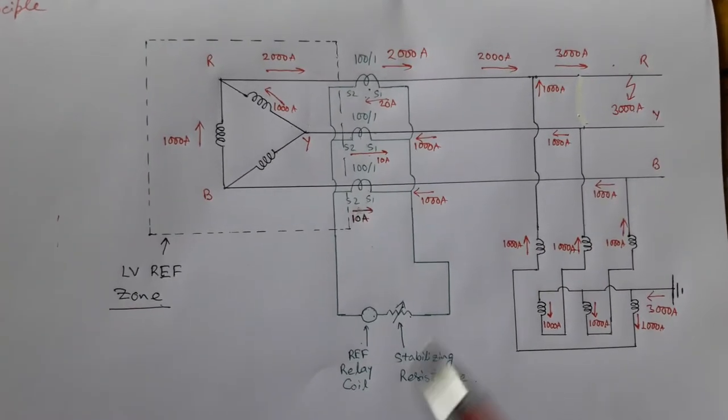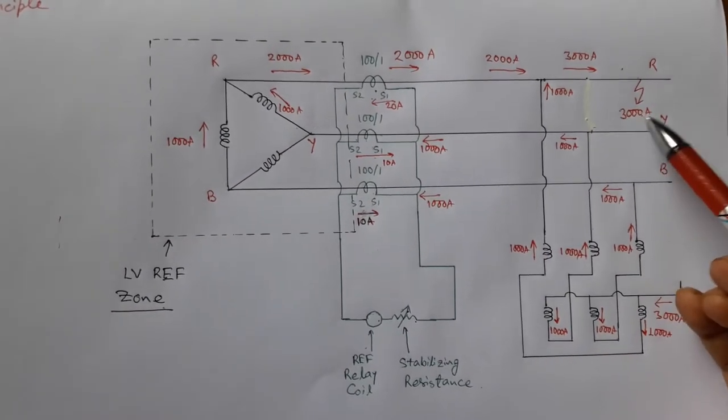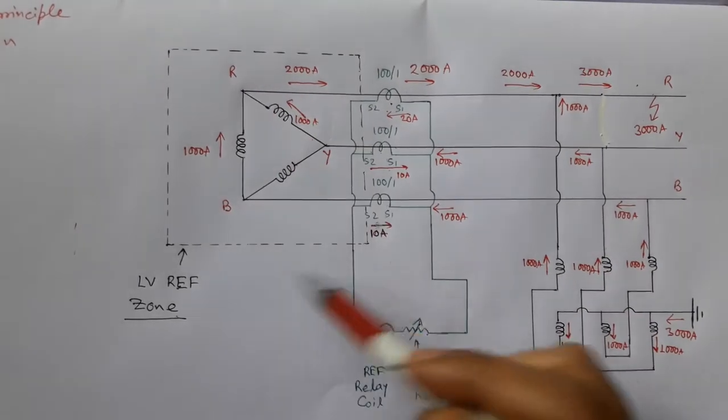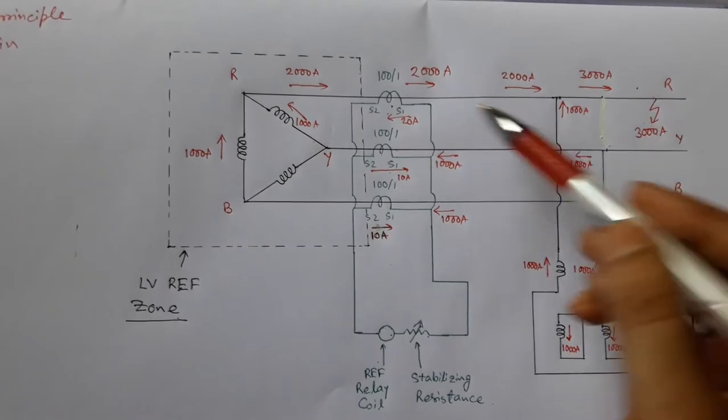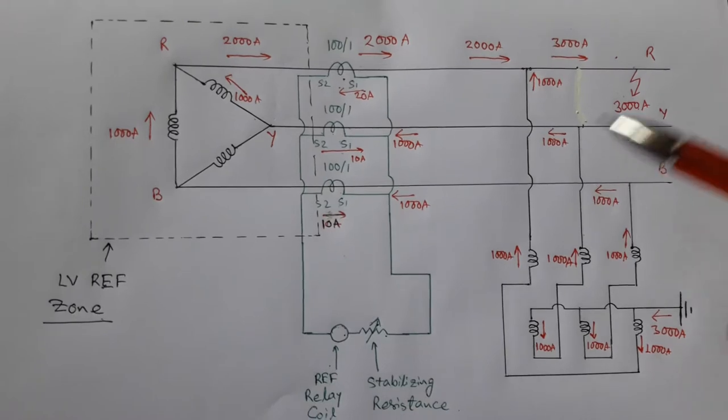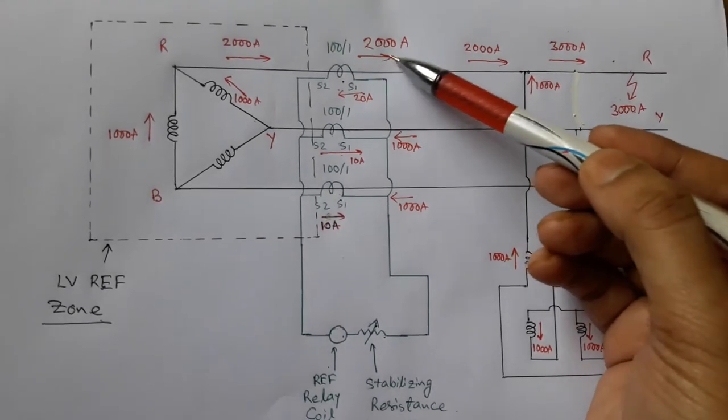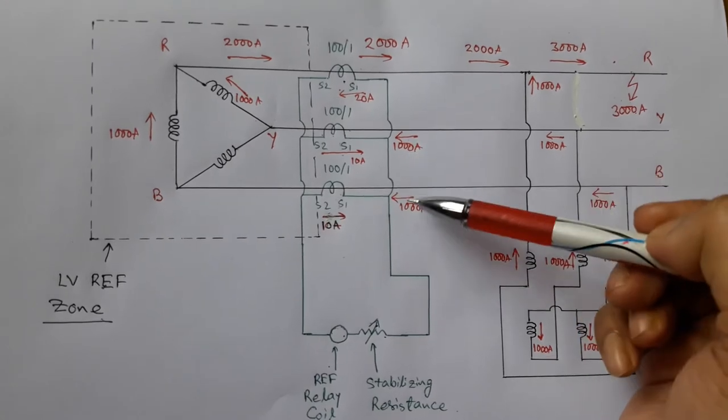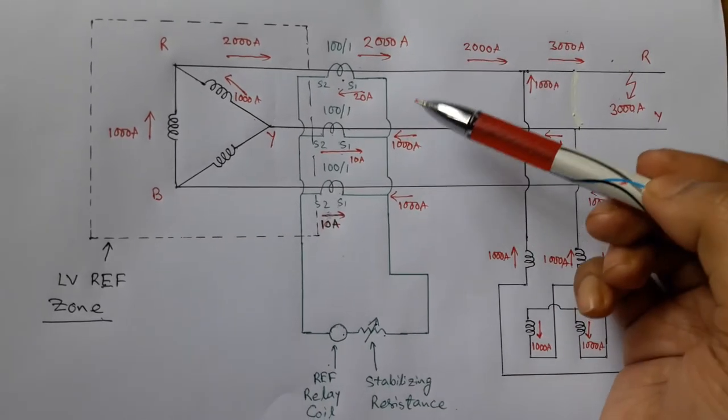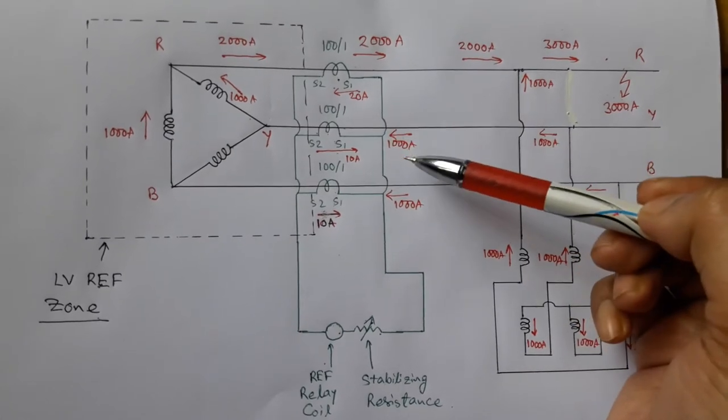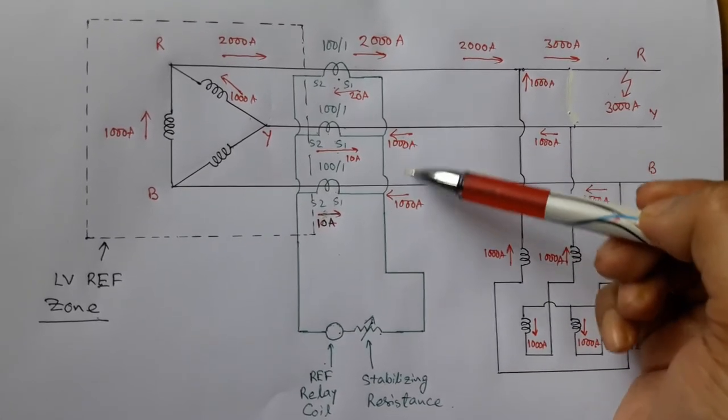In this example, notice that a 3000 ampere fault current has occurred outside this protection zone. This is the current distribution in the primary power system. Notice that current flowing in the red phase is double the current flowing in yellow and blue phases. Also notice that the direction of red phase current is opposite to the direction of current in yellow and blue phases.